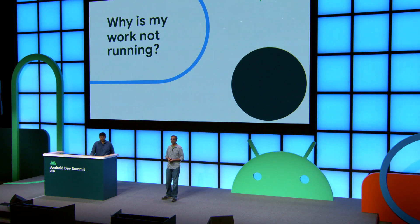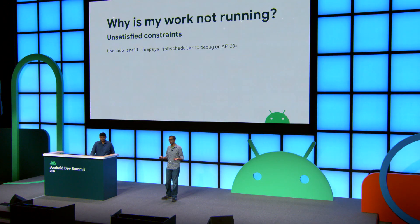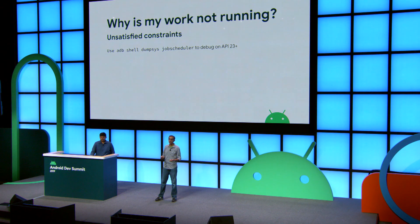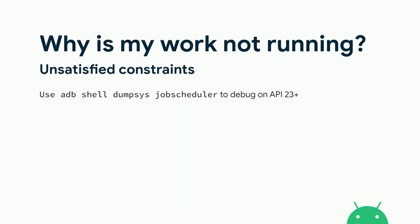A common question people ask is: why is my work not running? There's a wide variety of reasons. One is unsatisfied constraints — that's the most obvious answer. If your constraints aren't met, your work won't run. If you're on a newer device, you can always dump JobScheduler, because we store our jobs in JobScheduler, and it'll tell you what constraints aren't met.